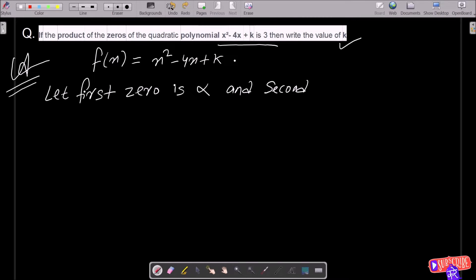According to the question, the product of zeros, that means α × β, is 3. So α × β = 3.